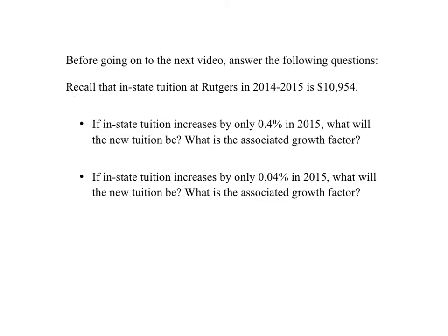Before going on to the next video, answer the following questions. We continue to work with in-state tuition of $10,954 for the 2014–2015 year. If in-state tuition increases by only 0.4% in the 2015–2016 year, what will the new tuition be and what is the associated growth factor? Another question: if in-state tuition increases by only 0.04%, what will the new tuition be? Note that 0.4% is a percent and 0.04% is an even smaller percent. Whether the number in front of the percent sign is a whole number or in decimal form, the way you convert percents to decimals is still the same.